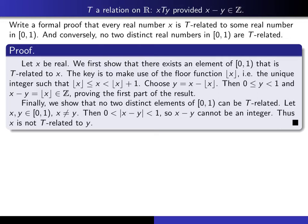Okay, well, here's my formal proof. We start with a real number x. And we first have to show that there exists an element in this interval that's T-related to x. So the key is to make use of this floor function, which is the unique integer that's less than or equal to x. But when you add 1 to it, you find yourself strictly bigger than x. Remember, we considered this function in an earlier exercise, and we proved the existence of it using the well-ordering property of the natural numbers. So now all you have to do is choose y to be x minus the floor of x. Then by definition, that lies in this interval. And just by bringing these guys over to the opposite side, you see that x minus y is the floor of x, and that's an integer.